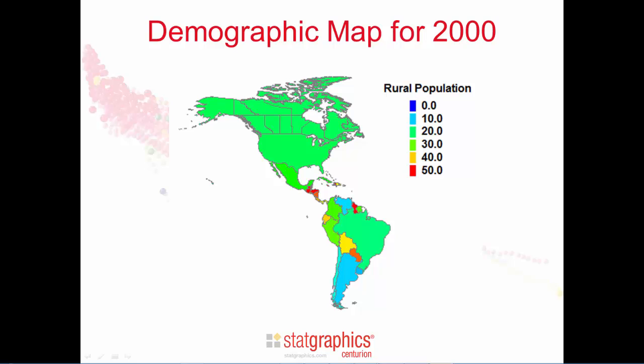This map shows the percentage of the population in each country in the Western Hemisphere that lives in rural rather than urban areas. It's a map for the year 2000. You can see that the rural population varies from a low of about 10% in countries like Venezuela and Argentina to a high of 50% in several countries in both Central America and South America.